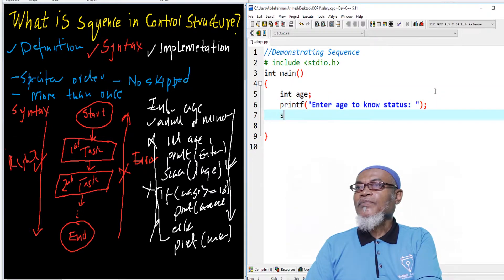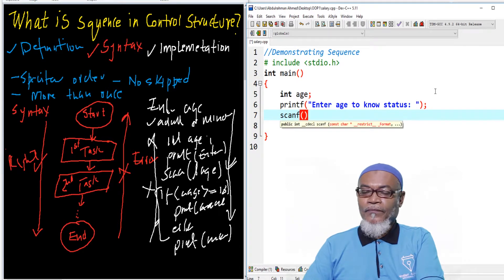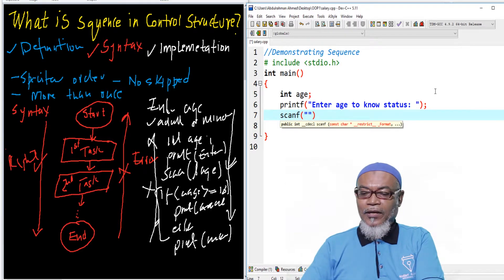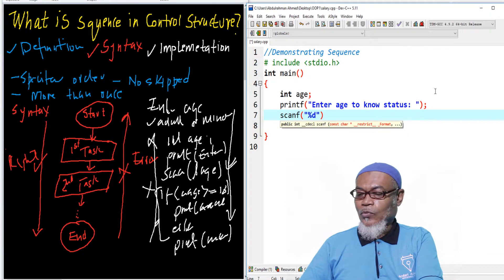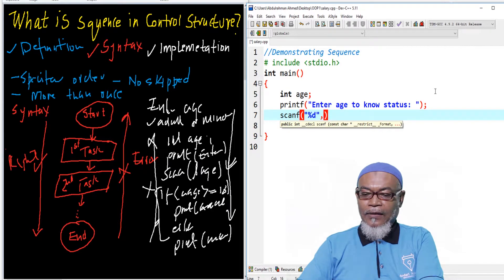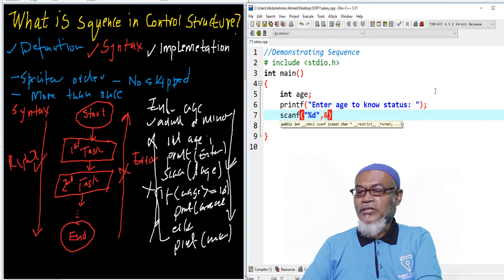And then now we capture the variable age using a scanf. And in that particular scanf, we have got the modifier. And then we have the address of age.